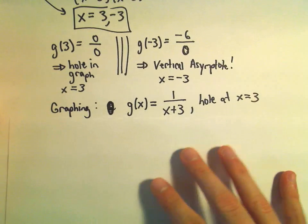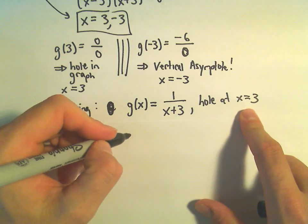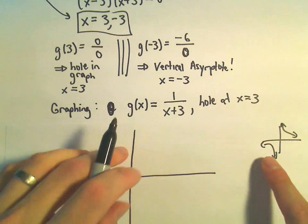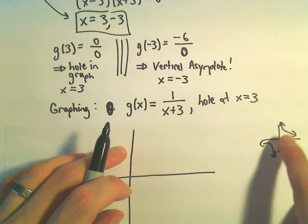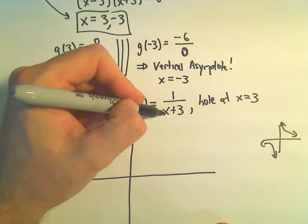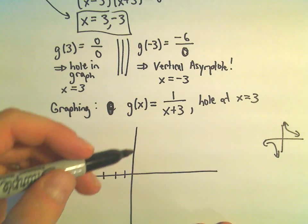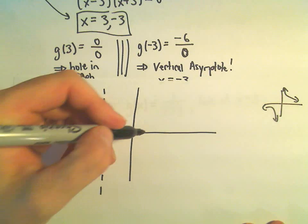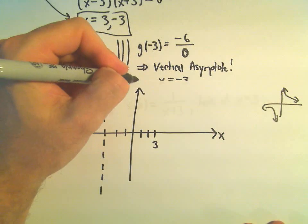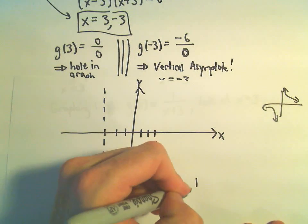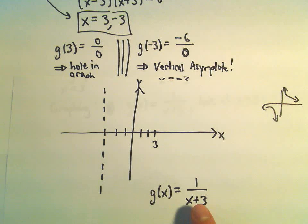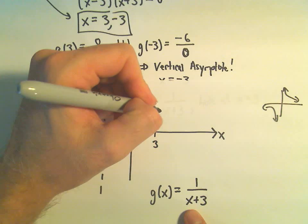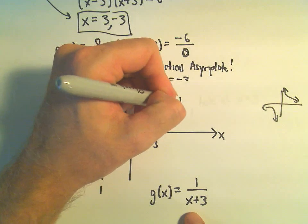So what this tells me is I'm really graphing g of x equals 1 over x plus 3, but I have to remember there's a hole at x equals 3. The function 1 over x, replacing x with x plus 3, shifts the graph 3 units to the left, which is where our vertical asymptote is at negative 3. To find the hole coordinates, I plug 3 into 1 over x plus 3 and get 1 over 6. So the hole is at the point 3 comma 1 sixth.